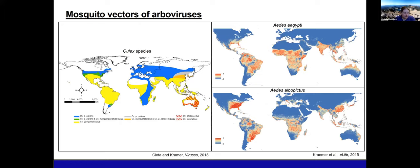Culex mosquitoes are really widespread across the globe. On the left you can see Culex pipiens in blue, Culex quinquefasciatus in yellow, and hybrid regions in green — spread across most continents into pretty high northern regions. On the right, Aedes aegypti is more of a tropical mosquito, currently invading areas like California and southern Europe. Aedes albopictus has a similar distribution but extends further north because it is more cold-tolerant.